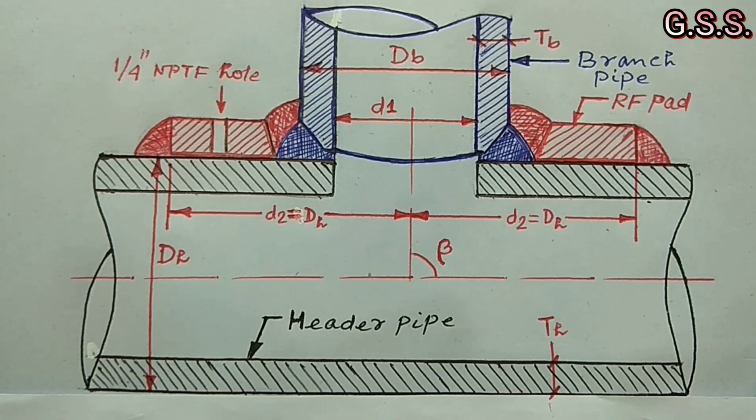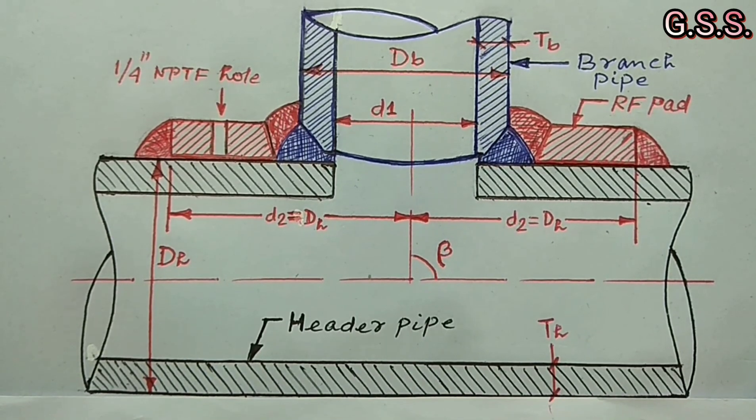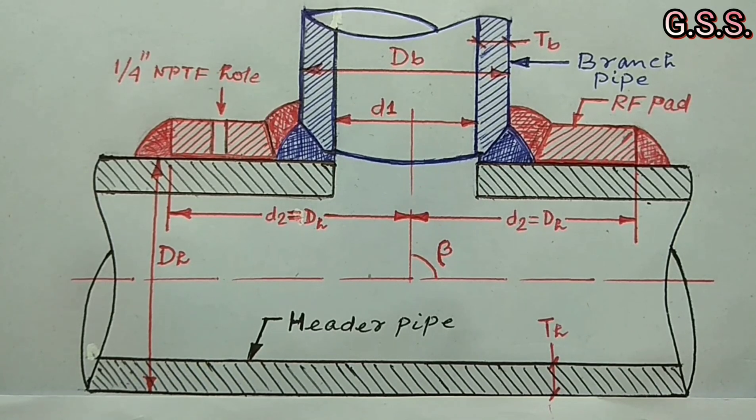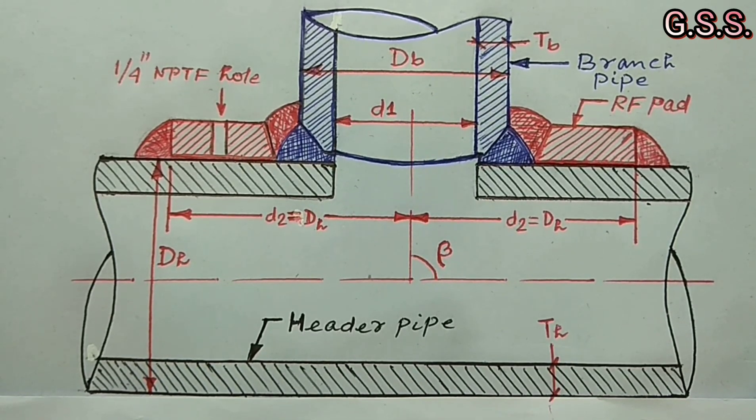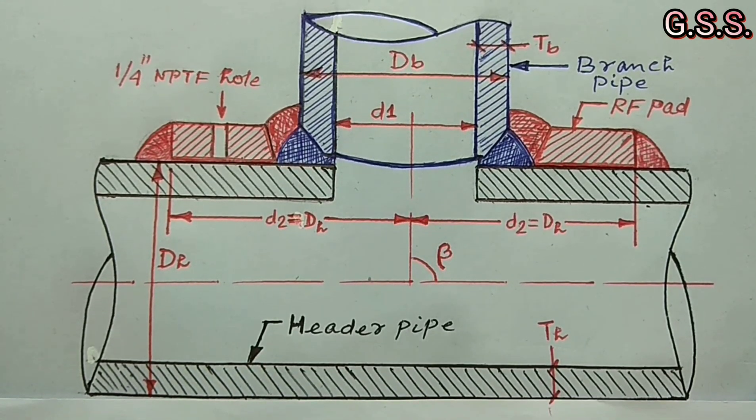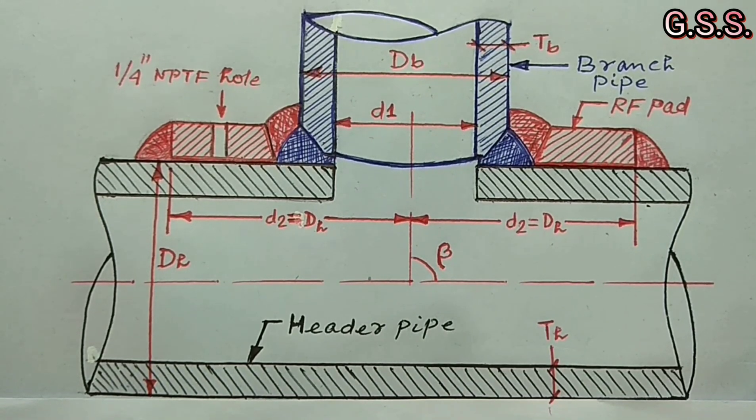If we do not consider the RF pad, then the branch is unreinforced branch. Both stub in and stub on branch connection can be made with or without a reinforcement pad as per requirement. This requirement is governed by pressure and stress criteria.